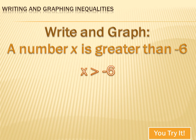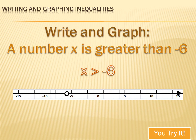Write and graph: a number X is greater than minus 6. This is a simple translation. A number X is greater than negative 6. Now could I graph that? Sure I could. I'd create a number line, go to negative 6, and put a circle there. It's an open circle — empty in the middle — because our solution doesn't include negative 6. It's all numbers greater than negative 6. After I've got that circle, I just draw an arrow towards the larger numbers, and I've graphically written X is greater than negative 6.